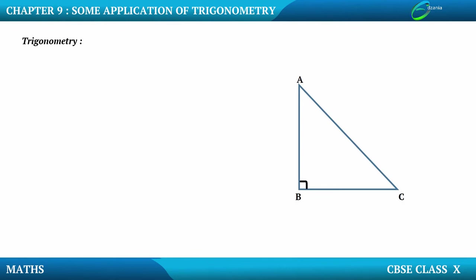As Trigonometry is applicable in right angle triangles, we have selected one right angle triangle ABC. Now let me select one of the acute angles C as theta. So our angle C is theta. We know that for this theta, the side in front of theta is also called the opposite side — so we have AB as the opposite side.